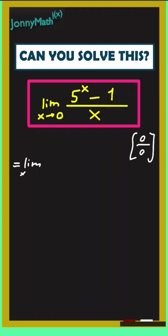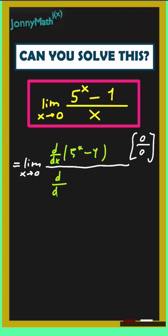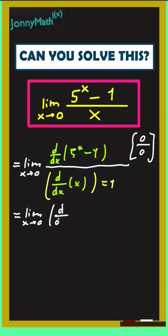So this equals the limit as x goes to 0 of d/dx of (5^x minus 1), divided by the derivative of x. But since the derivative of x equals 1, this is just the limit as x approaches 0 of the derivative of 5^x minus the derivative of 1.